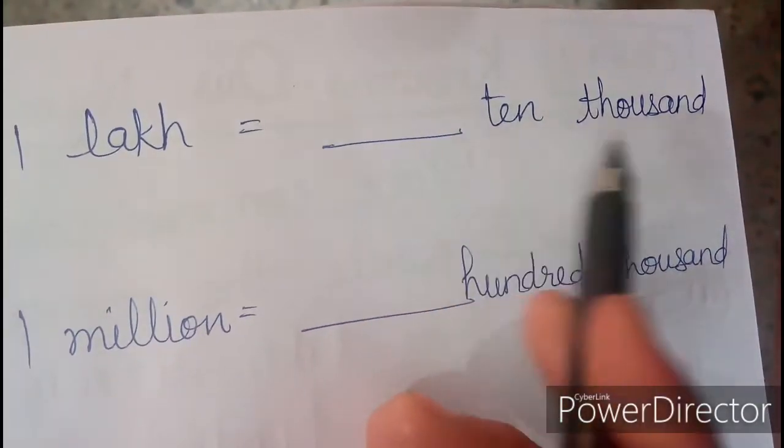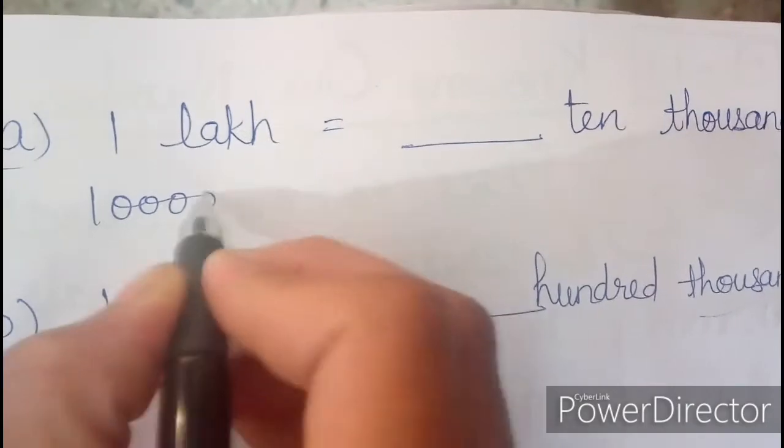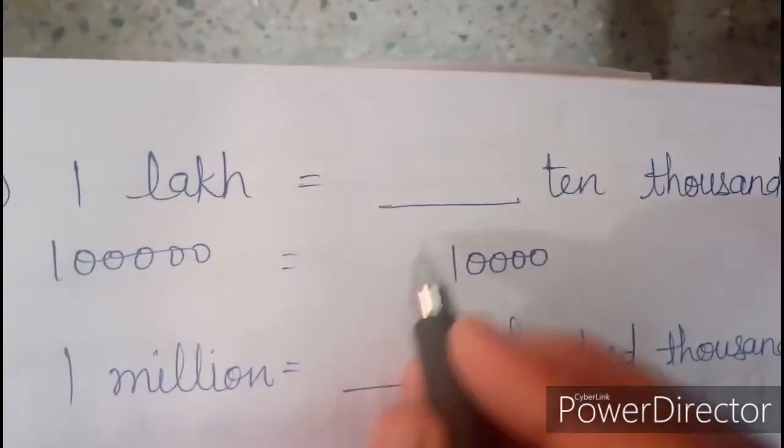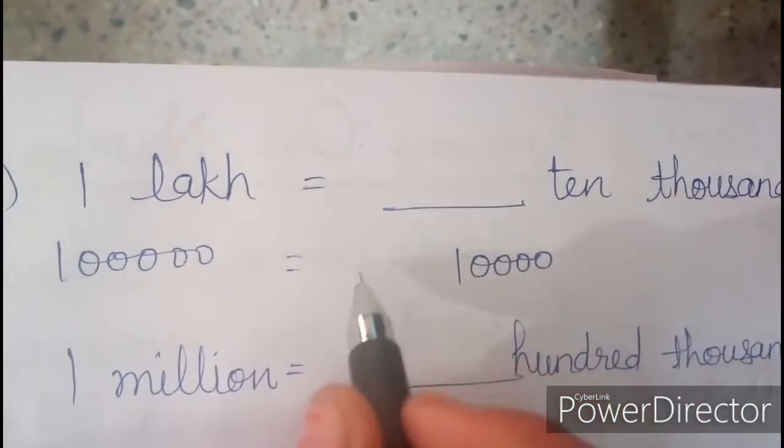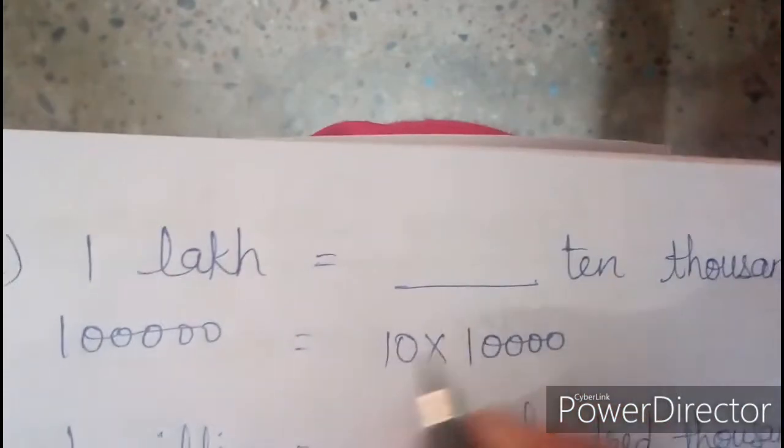1 lakh is equal to how many 10,000? Then write 1 lakh. 1 lakh has 5 zeros, and 10,000 has 4 zeros. So how can we make them equal? We have to multiply 10 with it.